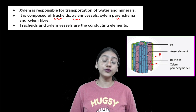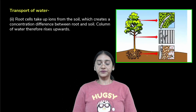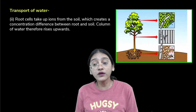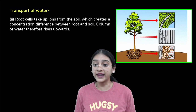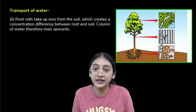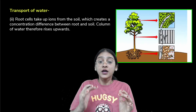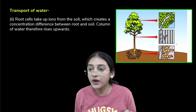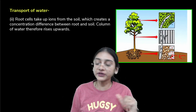Now let's understand how xylem transports water from the lower part of the plant to the upper part. Root cells take up ions from the soil, creating a concentration difference between the root and the soil. Root hairs, as you can see in this GIF, take up water as well as ions, causing a difference in concentration. As ions are taken in, water is also attracted from the soil and gets into the root hairs.